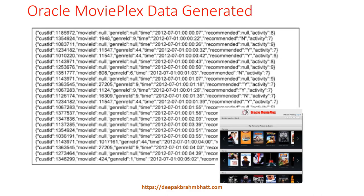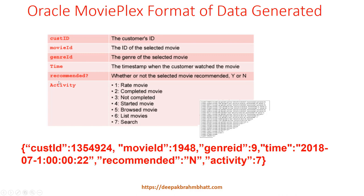Look at this data which is generated. The customer ID is the ID of the customer. The movie ID is the ID of the movie they are watching. The genre ID is the genre of the selected movie — the type of movie it is. The timestamp indicates when the customer watched the movie. There is also a field for whether or not the selected movie was recommended. And the activity field shows whether they searched, listed, browsed, started, paused, completed, or rated the movie after watching. Everything has been logged here, and all that information needs to be processed by these different technologies.